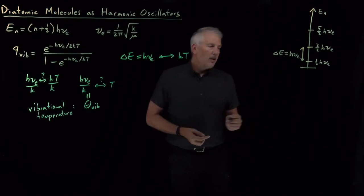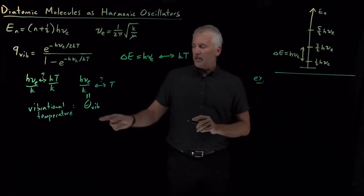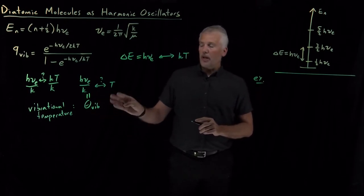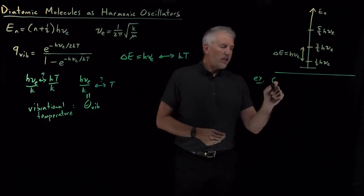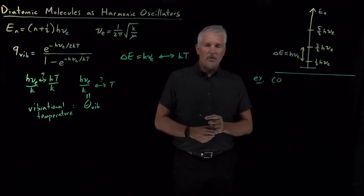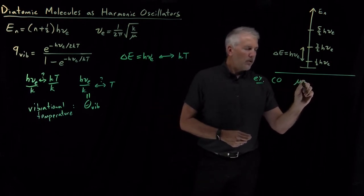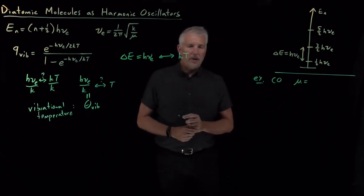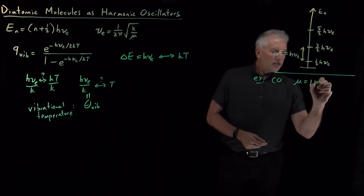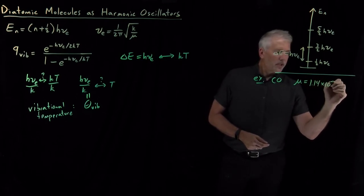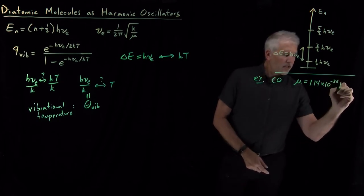Let's work an example to see how the vibrational temperature for a real-world molecule compares to real-world temperatures. We'll take the carbon monoxide molecule, a diatomic we've considered before. The reduced mass for that molecule — mass of carbon times mass of oxygen divided by their sum — is 1.14 × 10⁻²⁶ kilograms.